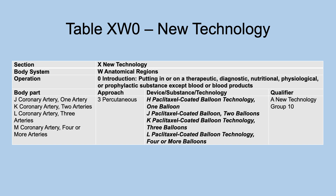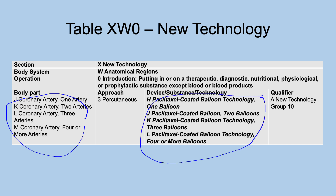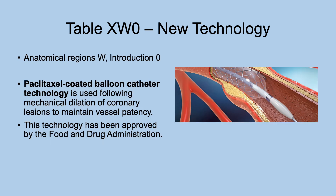Table XW0, introduction — this is paclitaxel-coated balloon technology for the coronary artery, with body part values of one balloon, two balloons, three balloons, or four or more, and corresponding device/substance/technology values also with numbers. This table already existed with one artery, two arteries, three arteries. This is a coated balloon catheter technology used for mechanical dilation of coronary lesions to maintain vessel patency — to keep the vessel open. This has been approved by the Food and Drug Administration.